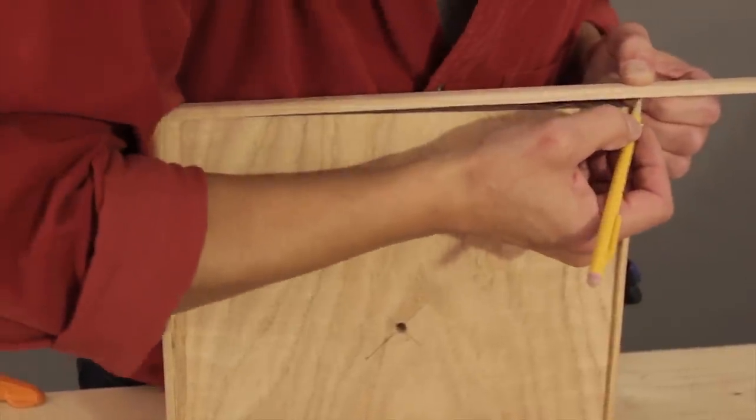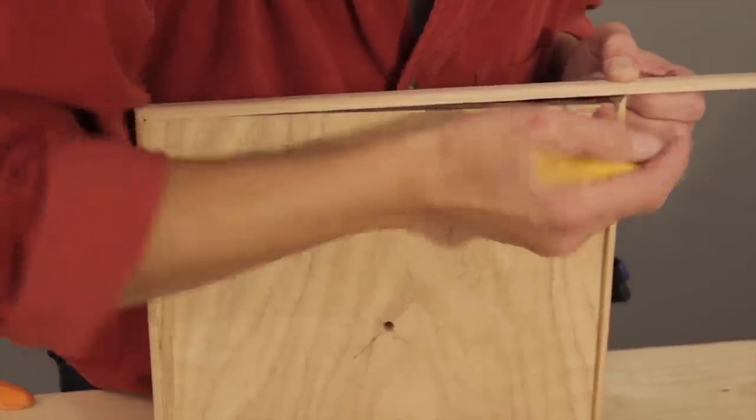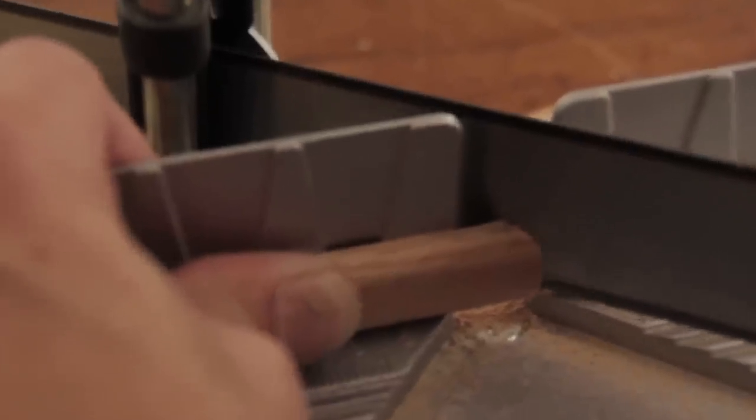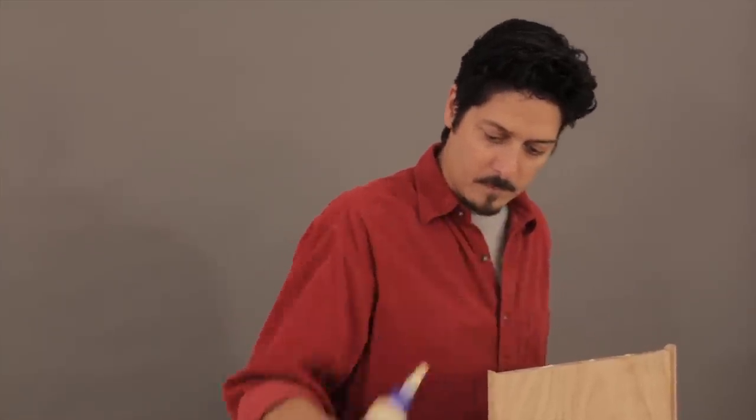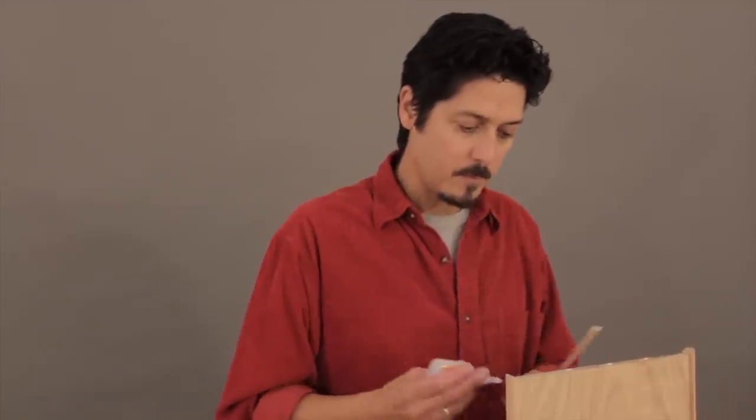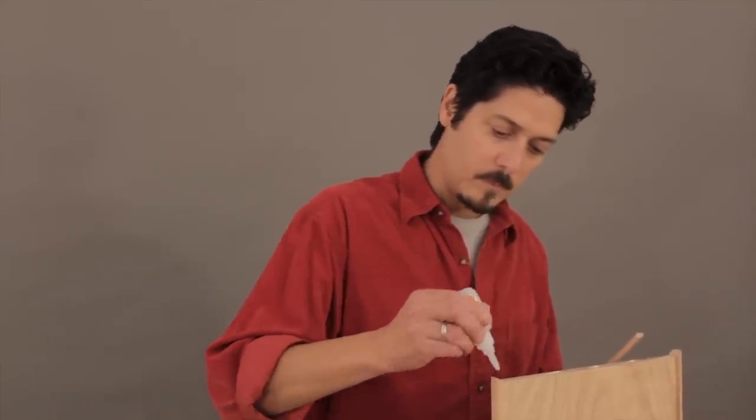Mark and miter the edge trim to fit the perimeter of the trays. We chose oak shelf trim for our tray. Apply alternate dabs of wood glue and super glue to the back of the edge trim and set it in place flush with the bottom of the trays.